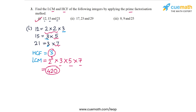Now let's do part 2. The integers are 17, 23 and 29. All of these numbers are primes themselves, so their prime factorizations are the numbers themselves.